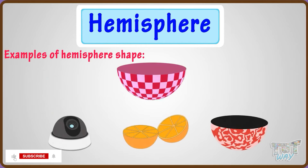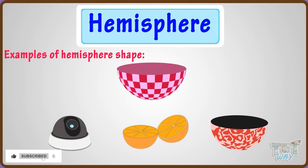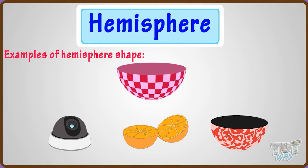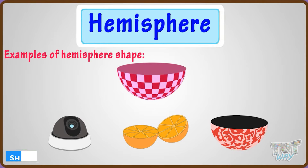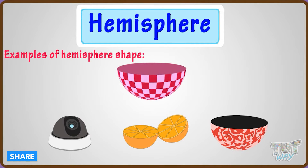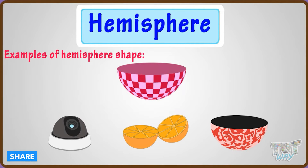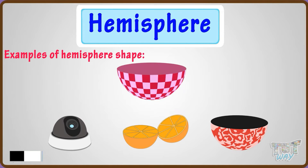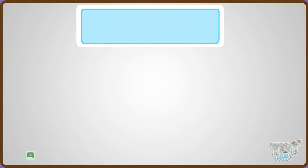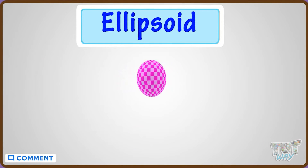These are a few objects which are hemispherical in shape. Now, let's learn another interesting shape — ellipsoid.